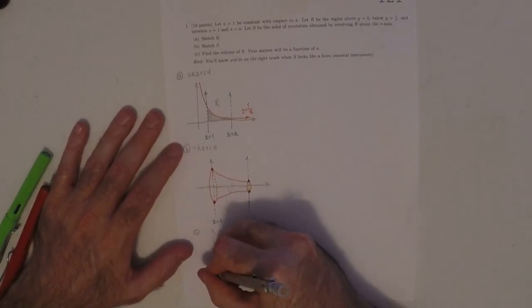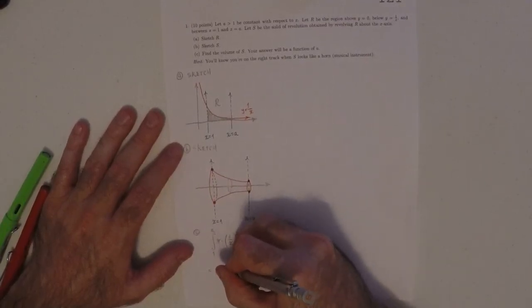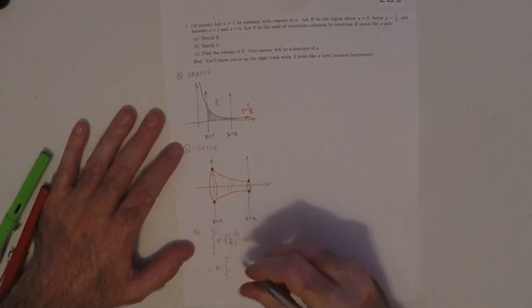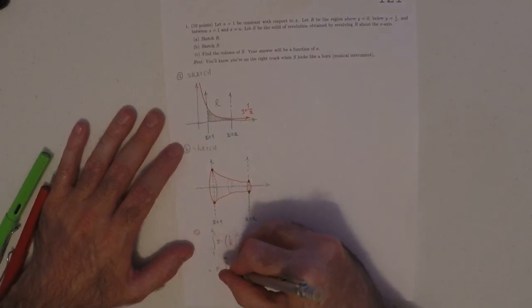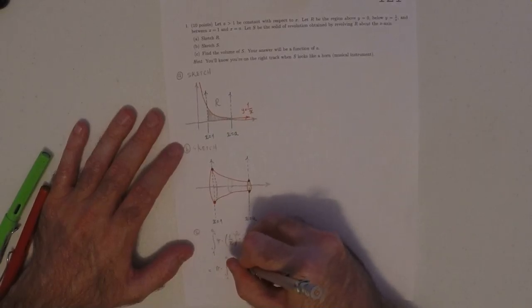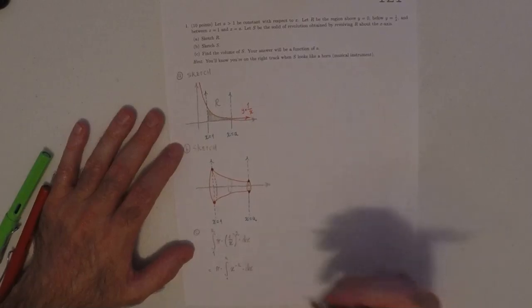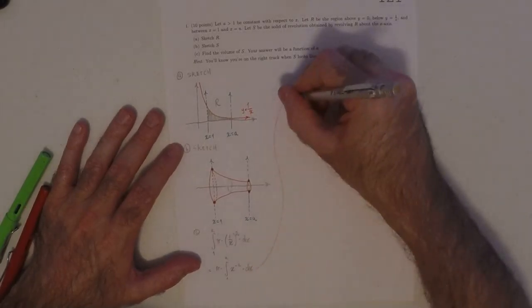So then simplifying this a little bit, this would be pi, and then integral 1 to A, and then the most convenient way to write that is x to negative 2, for the purposes of calculus, that's the most convenient way.